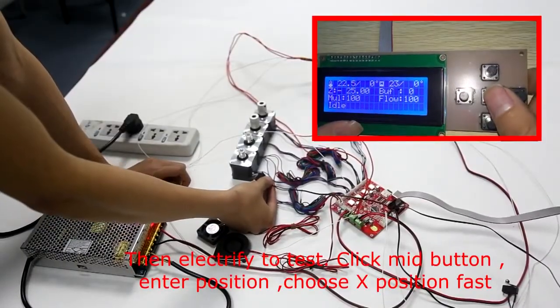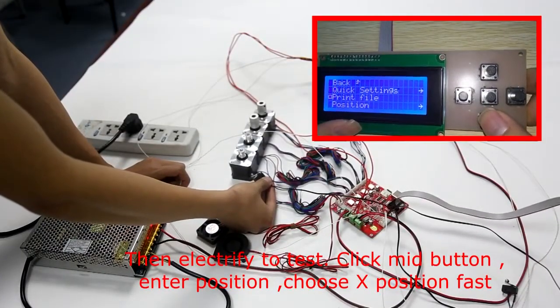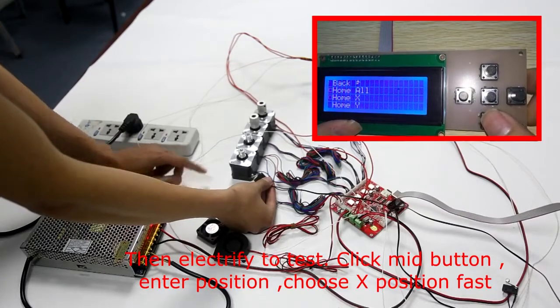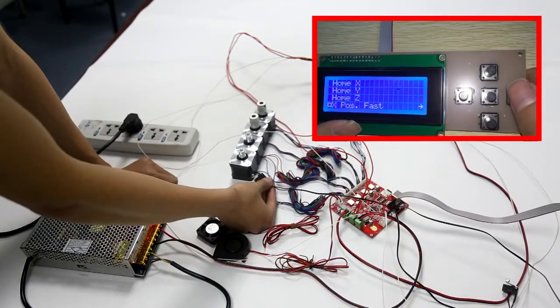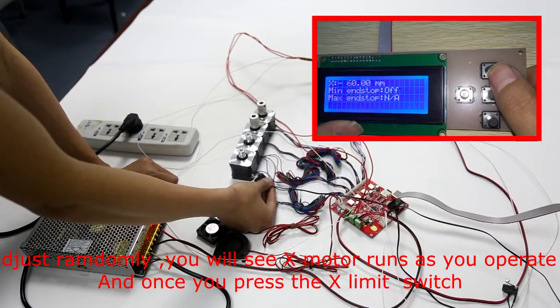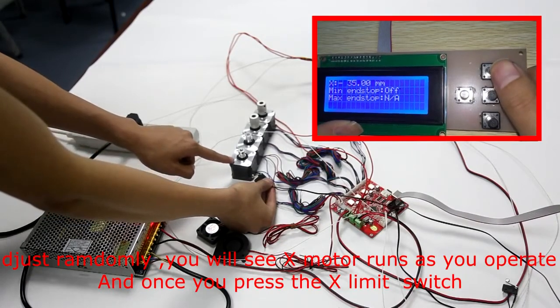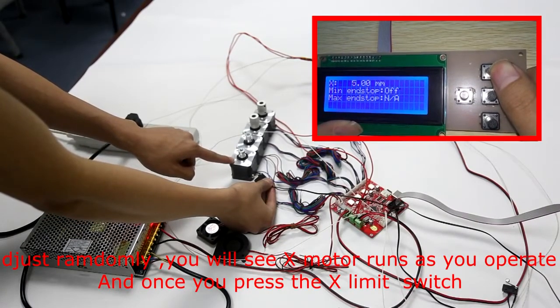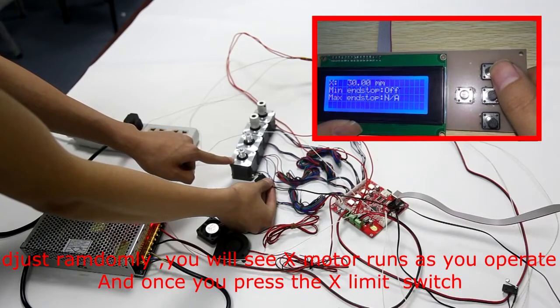Then electrify to test. Click the middle button, enter position, choose X position. Adjust the control. You will see the X motor runs as you operate. And once you press the X limit switch, it stops.